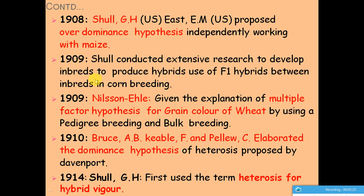In 1909, Shull conducted extensive research and developed inbreeds to produce hybrids, demonstrating the use of F1 hybrids between inbred lines in corn breeding. He worked on inbreeding, derived inbred lines, and used crosses between two inbred lines to produce hybrid vigor.